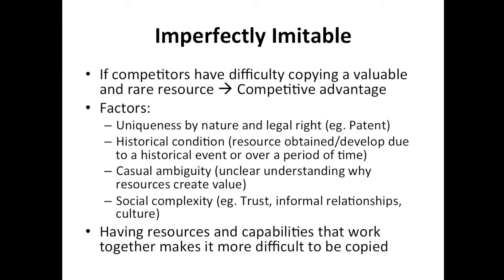Second is due to a historical condition — for example, a resource obtained or developed due to a historical event which could not be recreated or obtained over a period of time. Next is causal ambiguity, which refers to a firm's unclear understanding of why resources create value. And finally, social complexity, which results from trust, informal and interpersonal relationships, and culture.